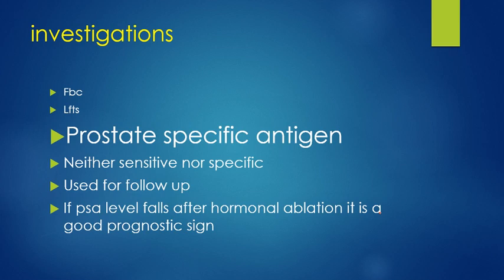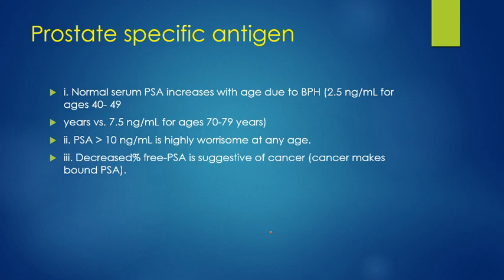In investigations, a full blood count and liver function test are performed. The FBC will show anemia, and if the tumor has metastasized, the LFT will be abnormal. PSA is neither sensitive nor specific and is mostly used for follow-up — if PSA falls after hormonal ablation, it is a good prognostic sign. Normal PSA increases with age due to BPH: at age 40–49 it may be 2.5 ng/mL, and at 70–79 years 7.5 ng/mL is normal. If PSA is more than 10 ng/mL, it is highly worrisome.